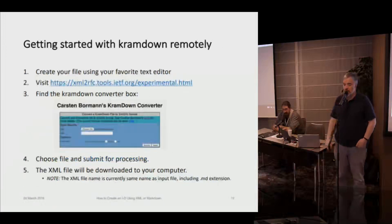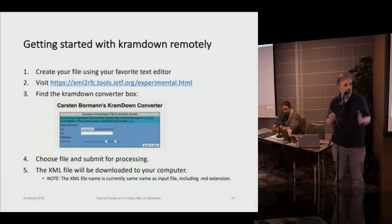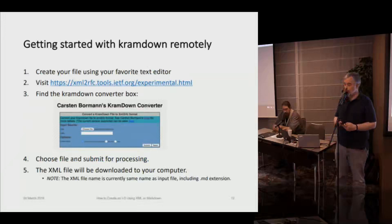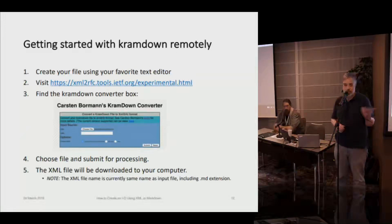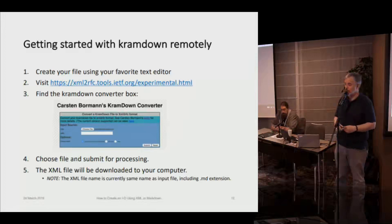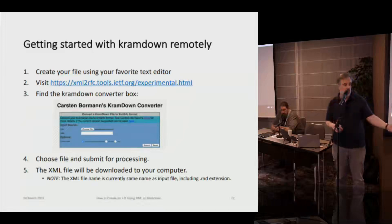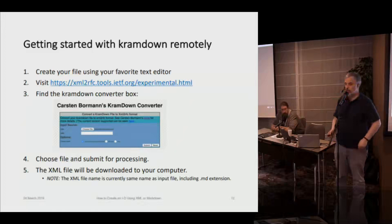That's my tool chain when I'm creating stuff now — I just write this file in Markdown, do kdrfc, and upload those files. Karsten did let me know that if for some reason your system does not have UTF-8 support, you may have unpredictable things if you put UTF-8 into your Markdown file. You also can, if you want to just experiment or your system doesn't support Ruby, use the Cramdown converter on the tools experimental page: you upload the file, and it spits out the XML file, which you then run through XML to RFC.